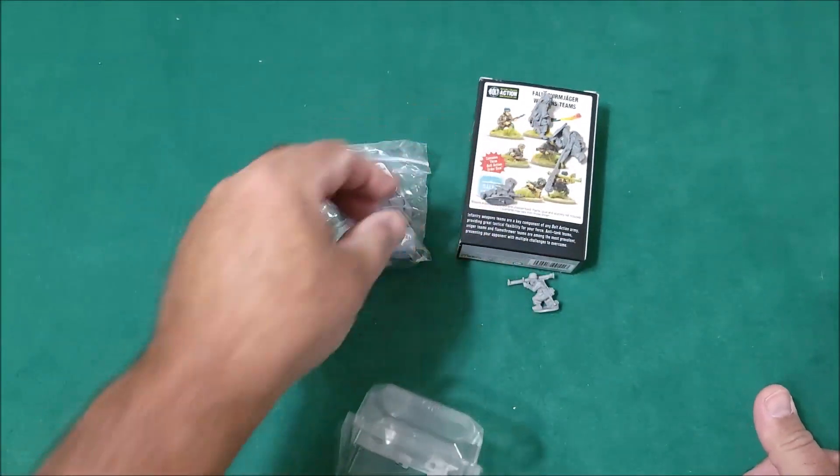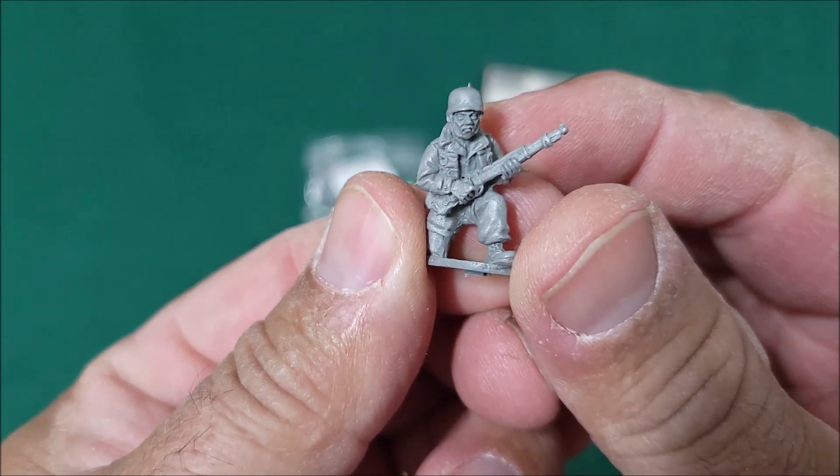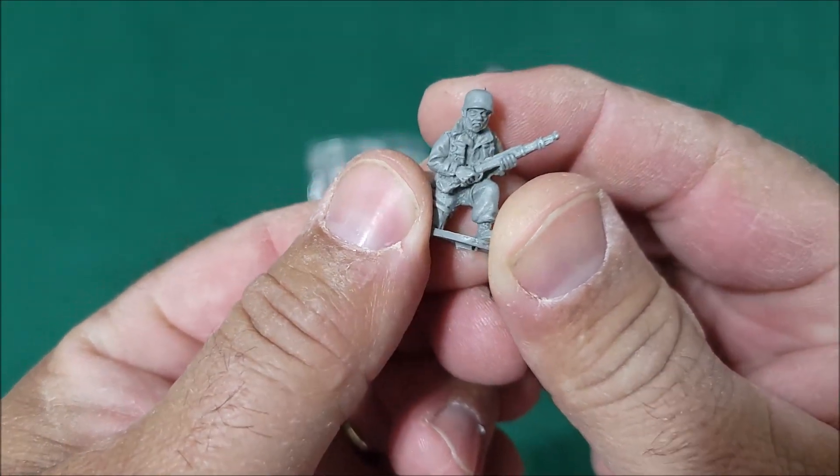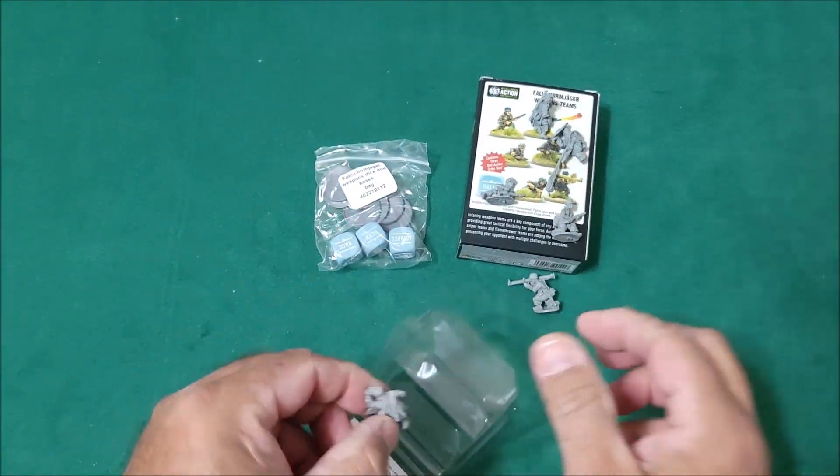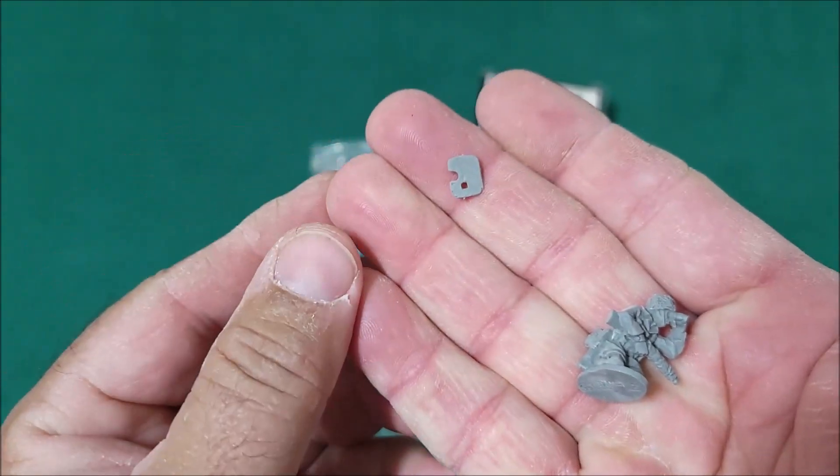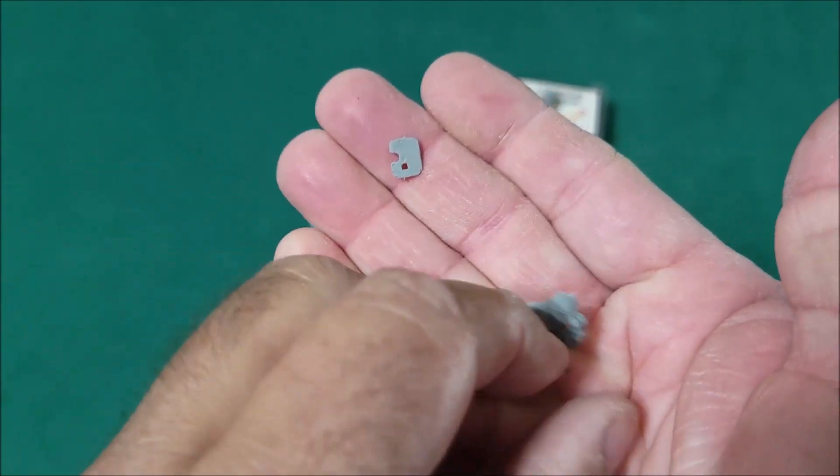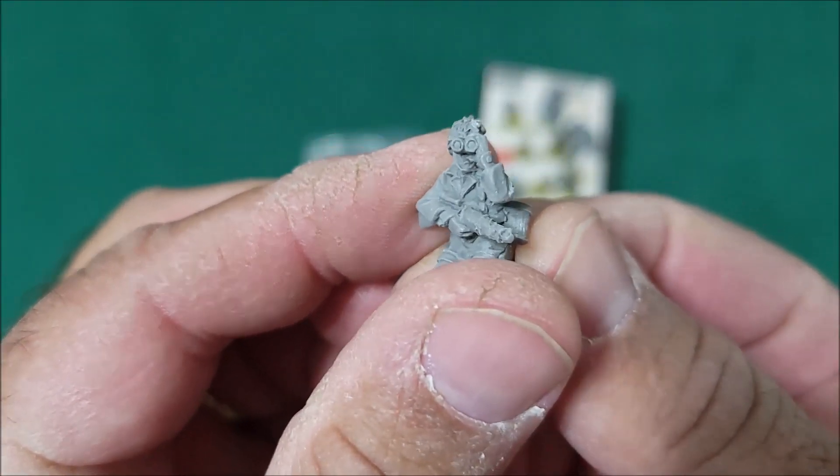There's a couple spotters here. There's the sniper, look at the helmet on there. And that's about it. Oh, it looks like there's a piece that goes to the bazooka, yep it's the shield for the bazooka, so you gotta glue that on there. Alright, glad I caught that. Here's another spotter looking through his binocs, pretty cool.